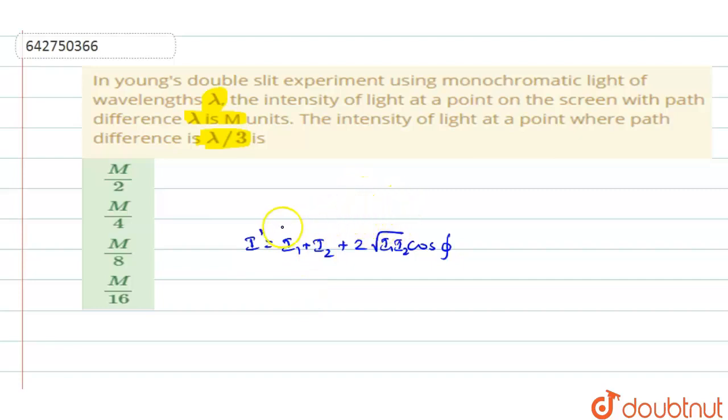Now when you need to find the value of phase difference, the phase difference is always given in terms of path difference. Because the values they are giving you in path difference, we shall convert it into phase difference. The phase difference φ is always given as 2π by lambda into path difference.